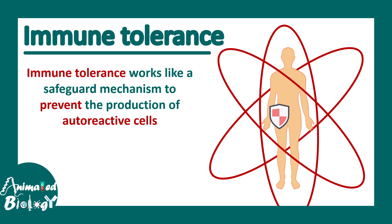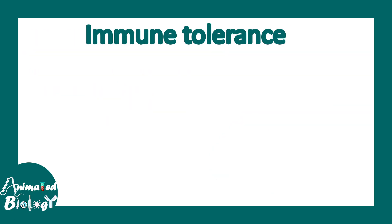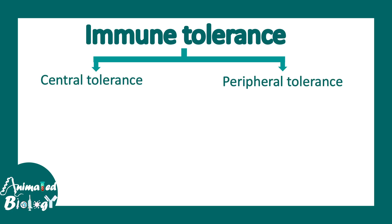There are two broad kinds of tolerance mechanisms in the immune system: central tolerance and peripheral tolerance. Both T cells and B cells have central and peripheral tolerances.